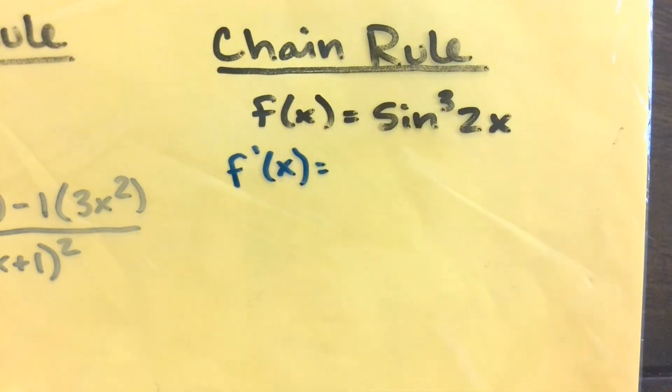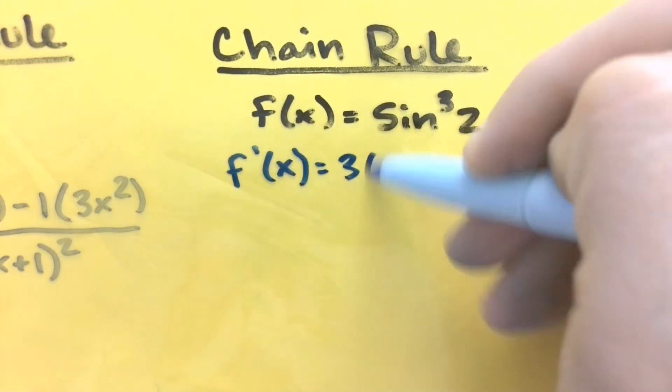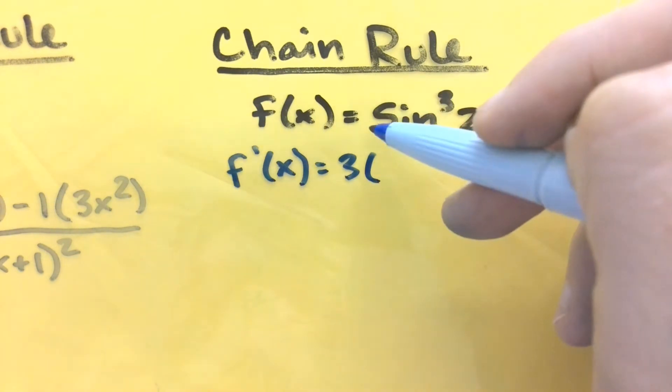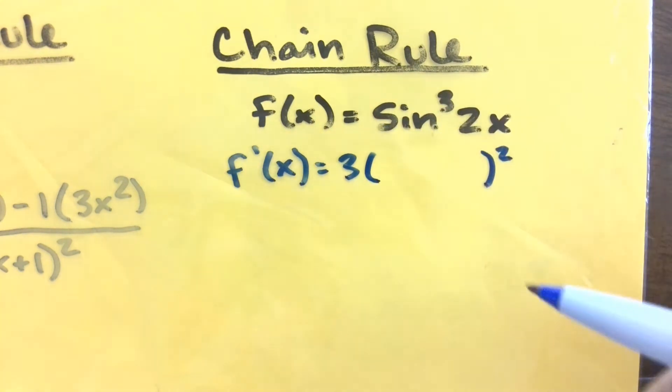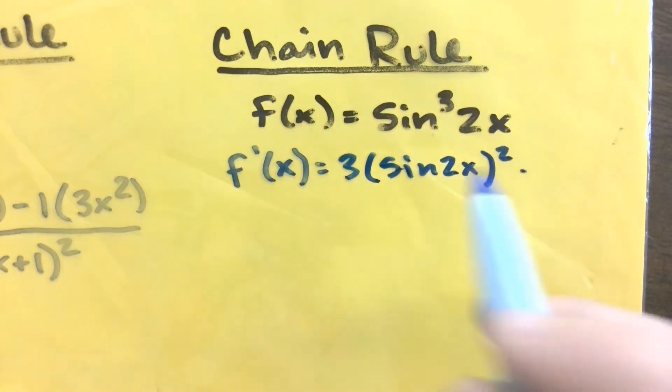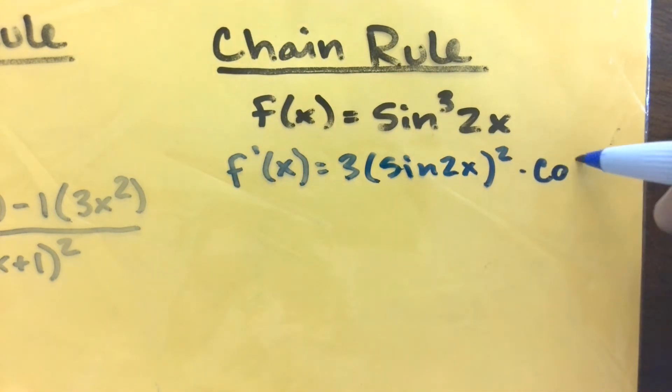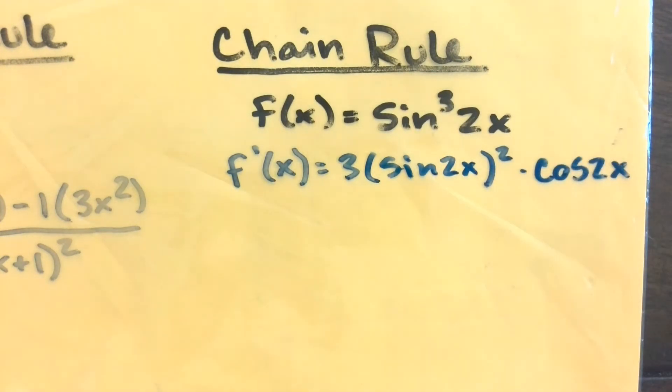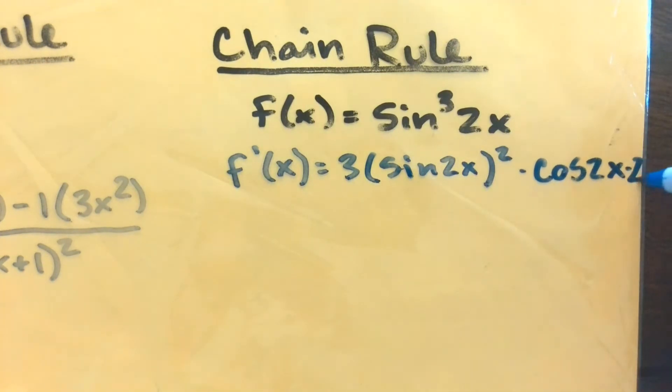We've got a function inside of a function here, so our first step is to take the derivative of the outside, so we've just got this bringing the 3 out front and raising that whole thing to the second. And then the derivative of the inside, our first inside thing is sine, so we'll take the derivative and say cosine of 2x. And then finally, the derivative of the very inside is going to be 2.